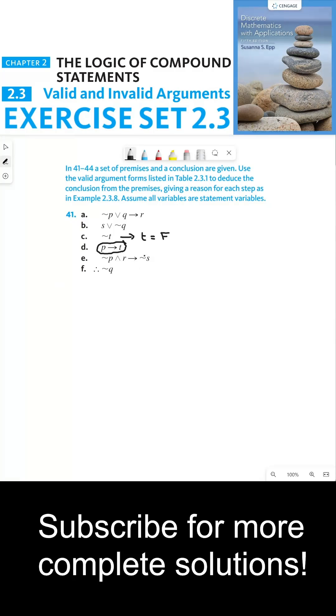According to modus tollens, if the conclusion is false of an implication, that means the hypothesis must be false as well, if the implication itself were to be true, which is the assumption here. All of these a through e we're assuming to be true assumptions. So because p implies t is true and t is false, this must mean that p is false.